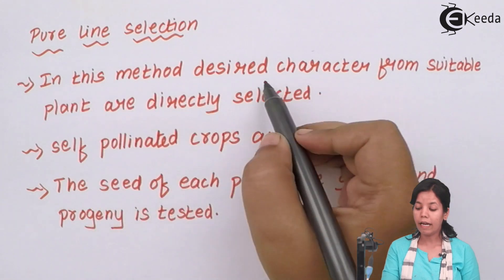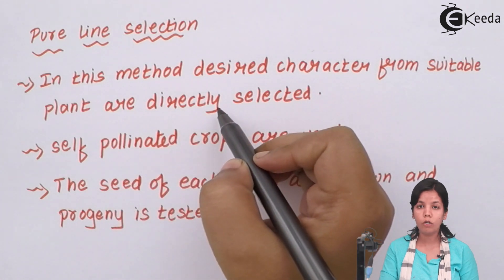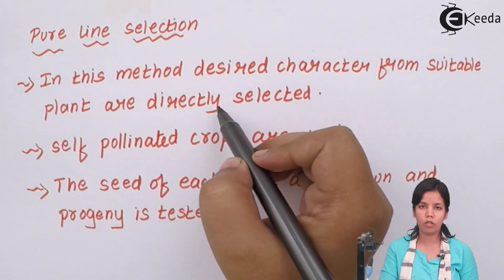You don't have to hassle a lot. You just select a trait or a character and you select a particular crop or a plant from a particular region of the country. Self pollinated crops are used.